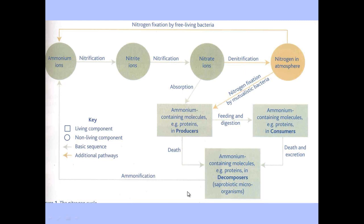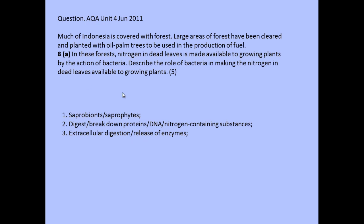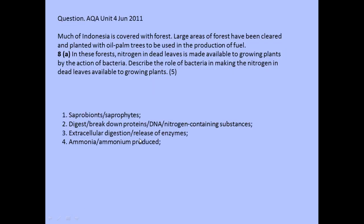From here, you reach the process of ammonification, which produces ammonium ions — that's the fourth mark available. The fourth mark is for referring to ammonia or ammonium ions being produced. From there, it's straightforward: ammonium ions are converted to nitrite and then nitrate ions. You can just go straight from ammonia to nitrate for the next mark — you don't even need to mention the intermediate nitrite.